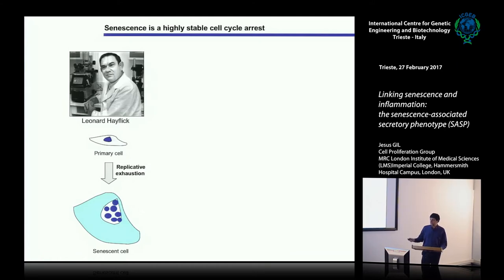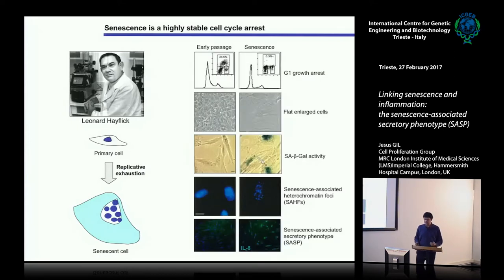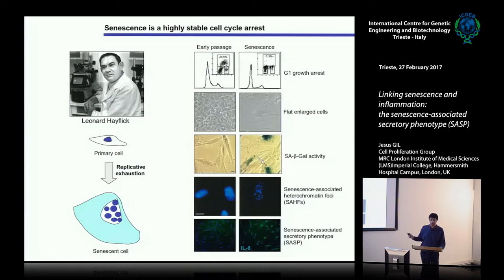How long it takes depends on the origin of the cells and how the cells are cultured, but eventually they reach this state. This state is defined mainly because it is an irreversible, or at least highly stable, growth arrest, so that even if cells are put in the presence of growth factors or serum, they still remain arrested, mainly in G1. That's the main definition of senescence.